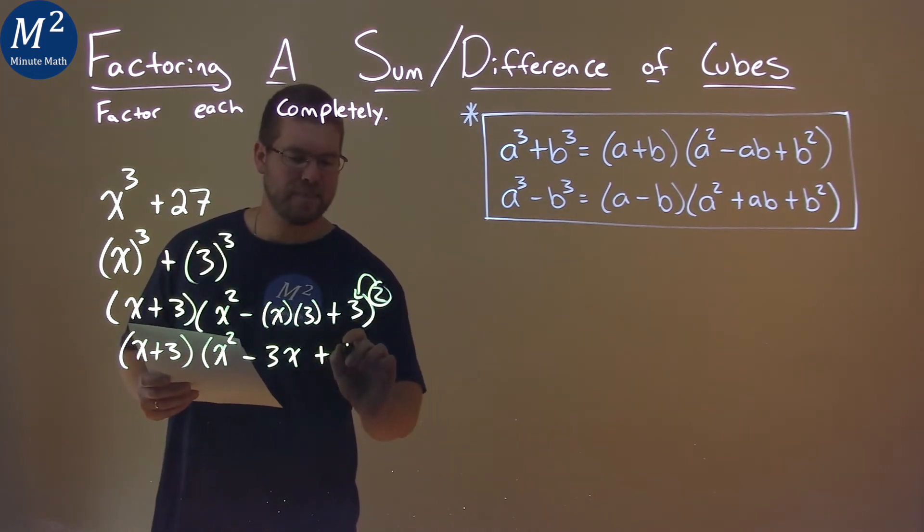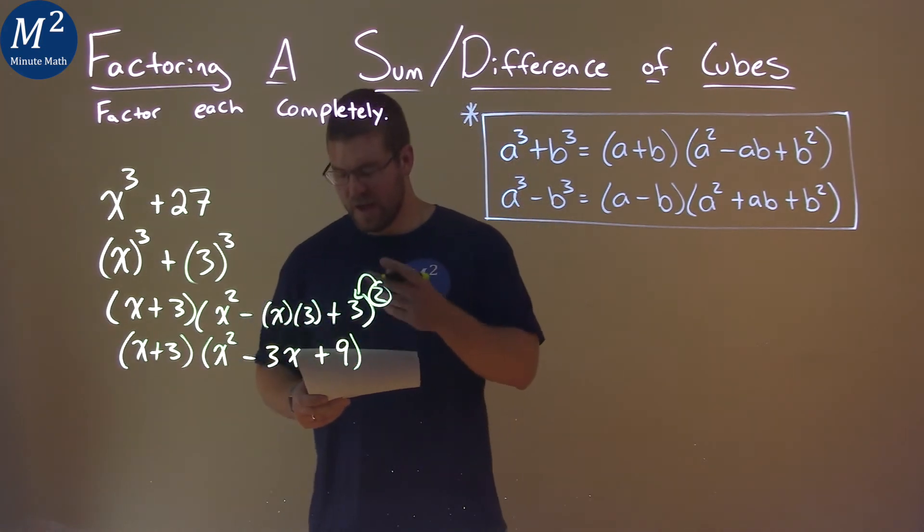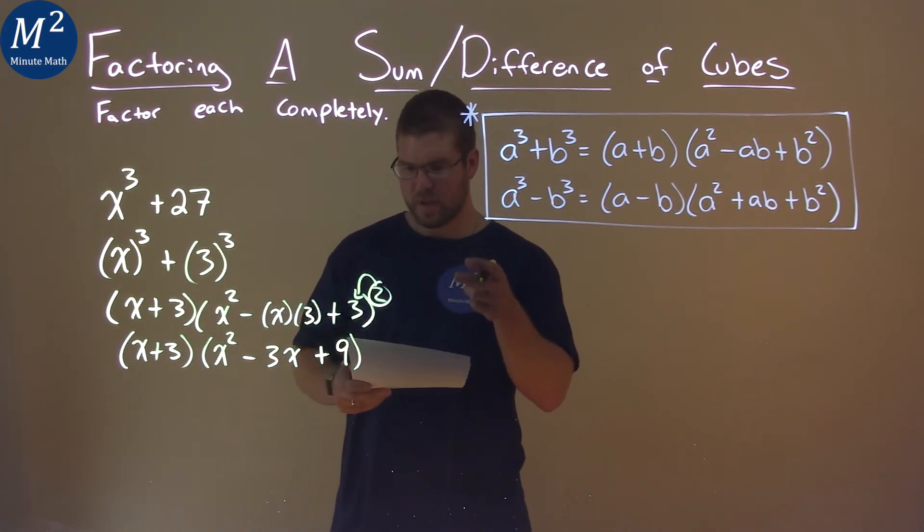Well, 3² is 9. So our final answer is (x + 3)(x² - 3x + 9).